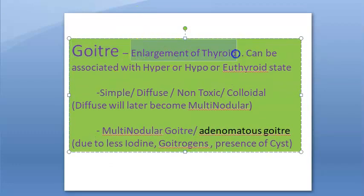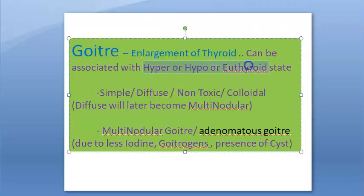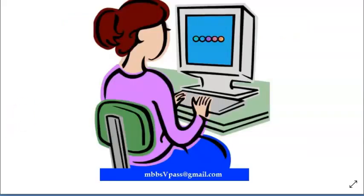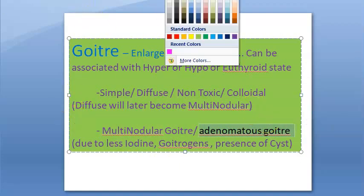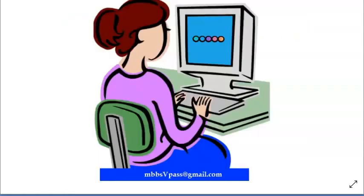Goiter simply means enlargement of the thyroid. It has no specific association with hypothyroidism, hyperthyroidism, or euthyroid status — it can be any of these. There are two types: simple goiter (diffuse non-toxic colloidal goiter) and multinodular goiter. Simple goiter can progress to multinodular goiter, also called adenomatous goiter. If it becomes toxic it is called toxic multinodular goiter or Plummer's disease.